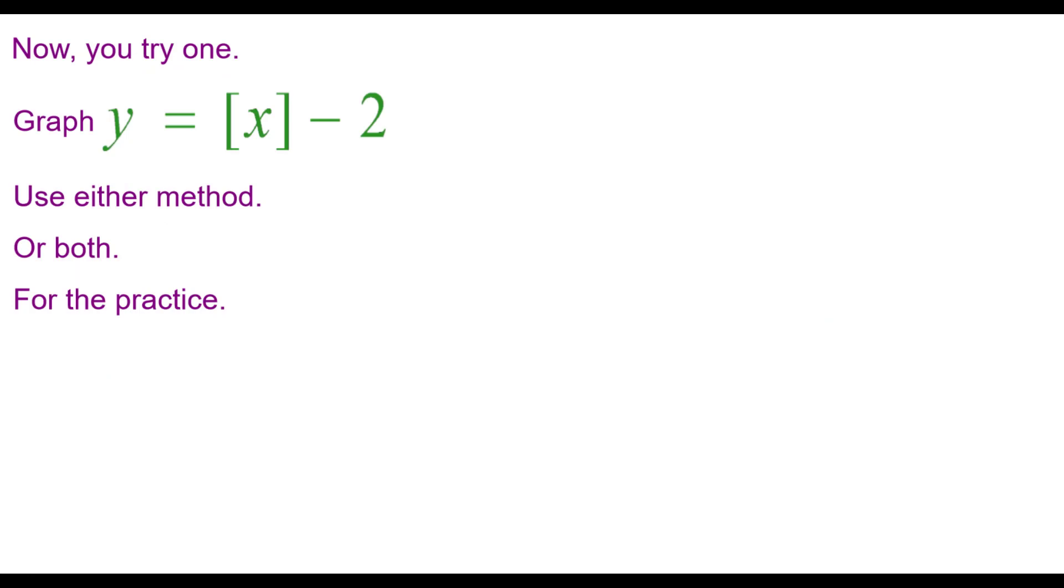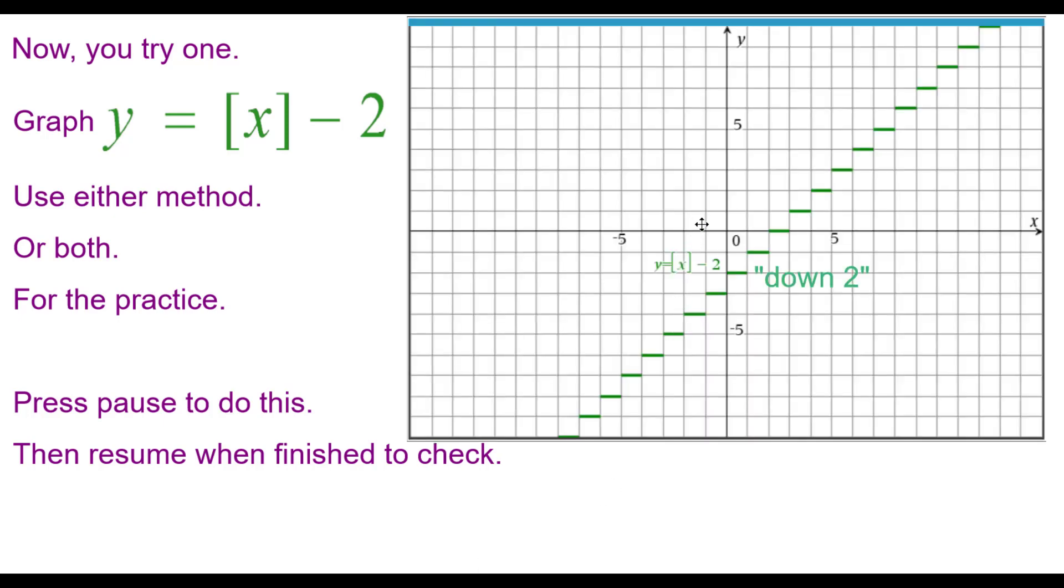Now you try one. Graph y equals the greatest integer of x minus 2. Use either method or both for the practice. Press pause to do this, then resume when finished to check your answer. This is the greatest integer of x shifted down 2 units.